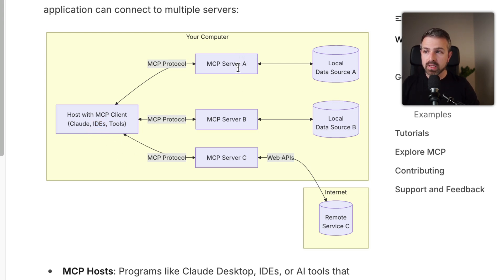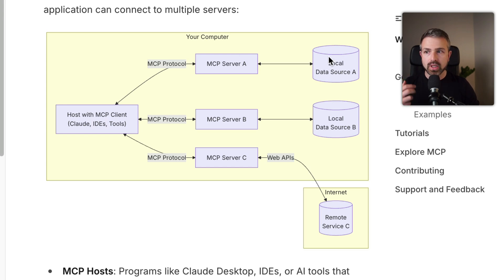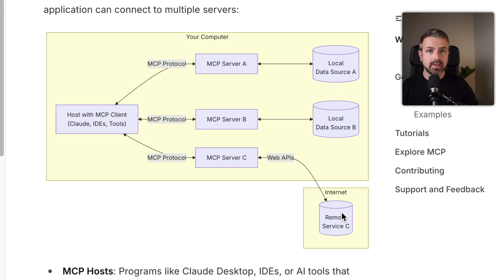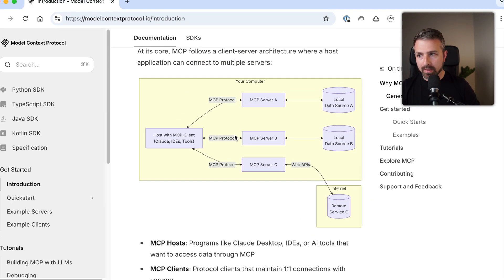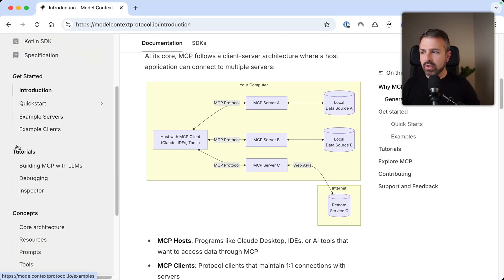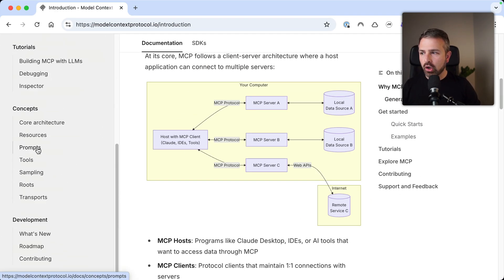Then you have these MCP servers, which are very specific to their context and know how to get more data — either they have access to some database, they access a website on the internet to pull in more data, or just on the file system they parse certain files, elaborate them and expose them in a much more LLM-friendly way. You can also see there are different kinds of concepts here — they can expose different prompts, tools, resources, etc. So how does that look like in the context of NX?